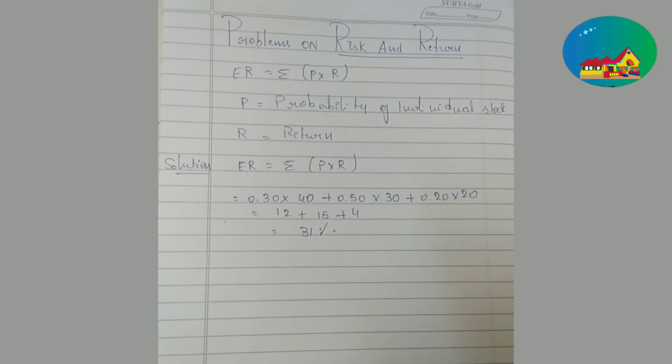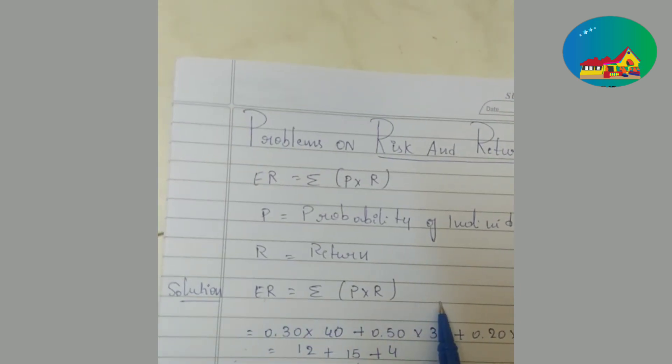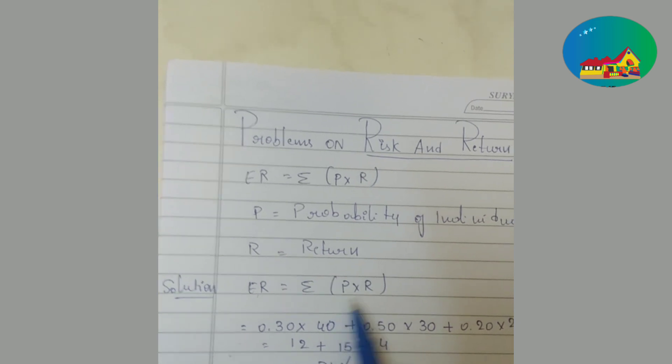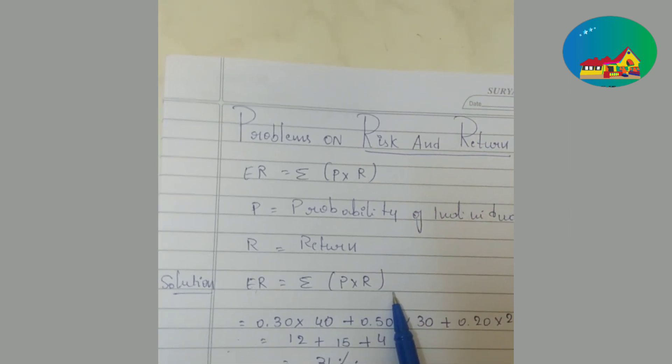This is the first problem solution using the expected rate of return formula. So P is probability of occurrence and R is return on individual stock.